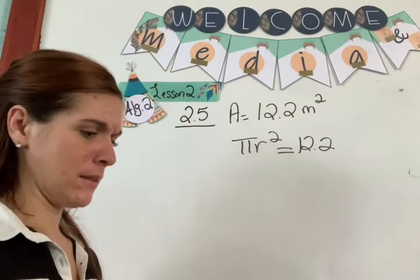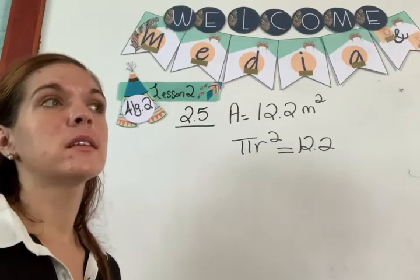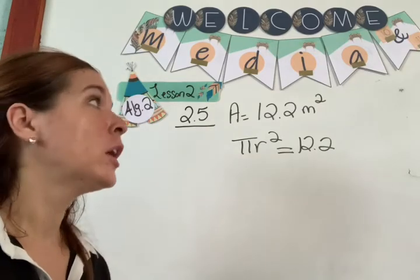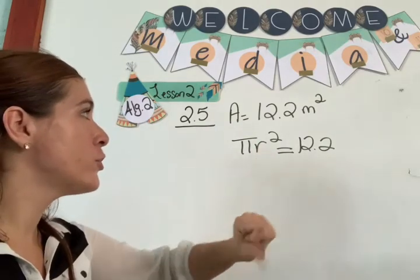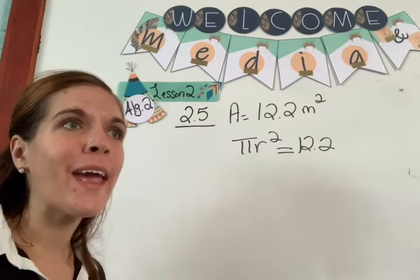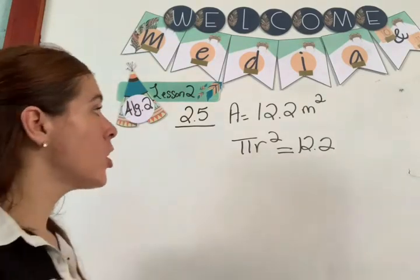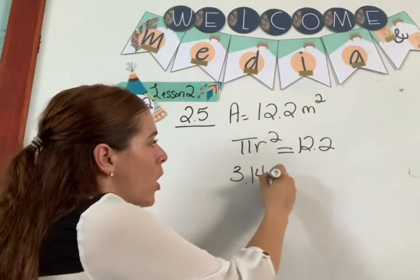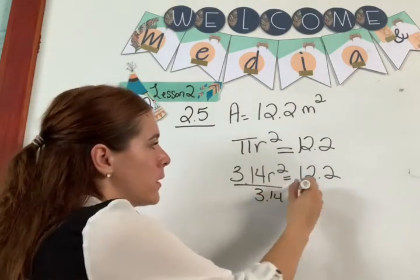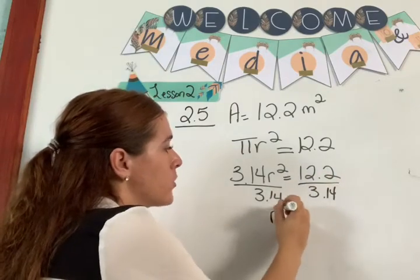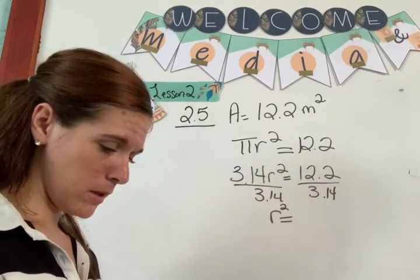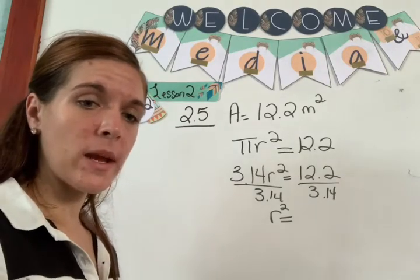Now you might say, well, I still can't get the circumference out of there — there's no circumference inside that formula. But you need to solve for r. Pi is already known, so you solve for r. We need to do these steps first; you can't go straight from knowing the area to knowing the circumference. So: 3.14 r squared equals 12.2. Divide by 3.14 and you get r squared equals 12.2 divided by 3.14, which is 3.88.